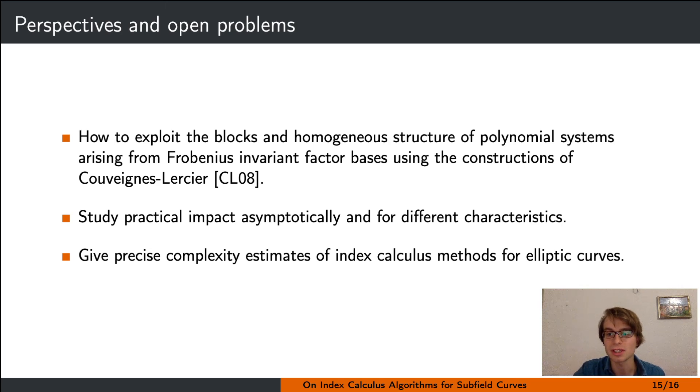Further, it would be good to study the practical impact of our improvements for Koblitz curves asymptotically and maybe run experiments also in different characteristics, as we restricted ourselves to characteristic 2. And finally, a big open problem is to get a precise complexity estimate for index calculus methods on elliptic curves in general. This would also allow for proper comparisons between index calculus algorithms for elliptic curves and Pollard's rho. However, while such a precise comparison seems to be out of reach, Pollard's rho seems to beat index calculus on curves that are used in practice.